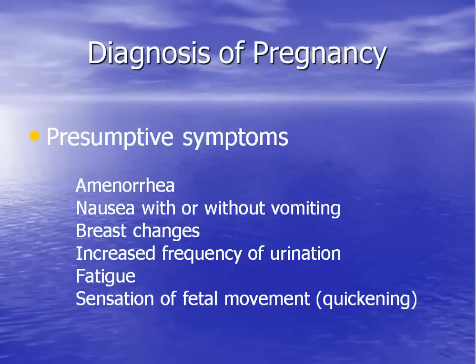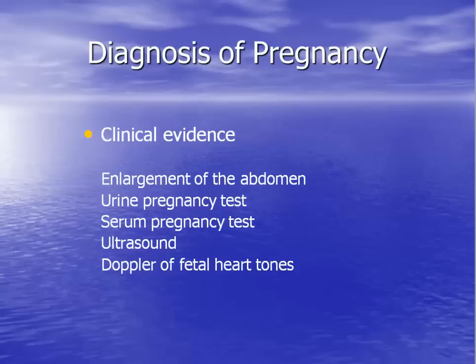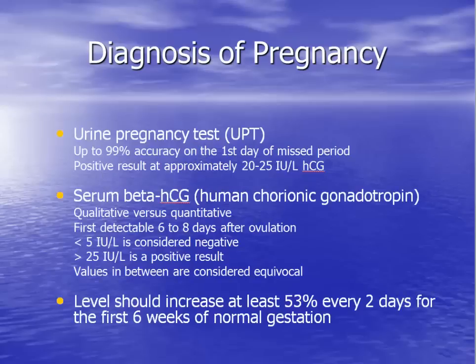Once the patient becomes pregnant, how do we know? The diagnosis of pregnancy can be made in several different ways. Pregnancy commonly presents with easily identifiable symptoms that should prompt further investigation. Physical examination, laboratory testing, and imaging can confirm the diagnosis. Pregnancy is most commonly confirmed with a pregnancy test performed on either the urine or the serum. A pregnancy test checks for the presence of human chorionic gonadotropin, or HCG, which is produced by the developing pregnancy.